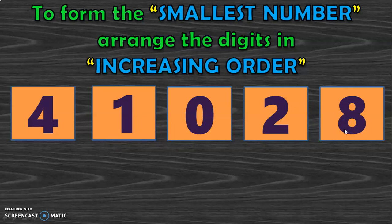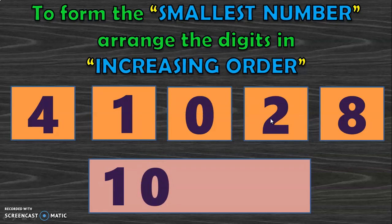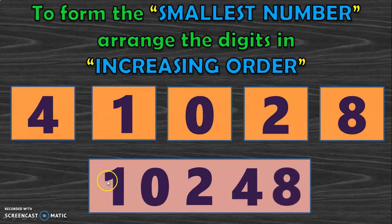We will arrange them in increasing order. The smallest digit is 0, but we cannot begin a number with 0, so we move to the next digit which is 1. So 1 will be written in the highest place value, which is the 10,000th place, and 0 moves to the 1,000th place. The remaining digits are arranged small to big: 2, 4, 8. So the smallest 5-digit number is 10,248.